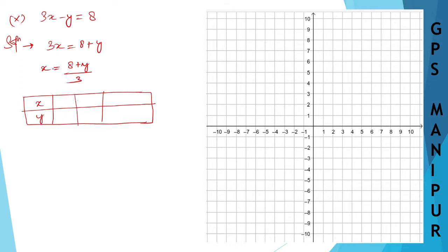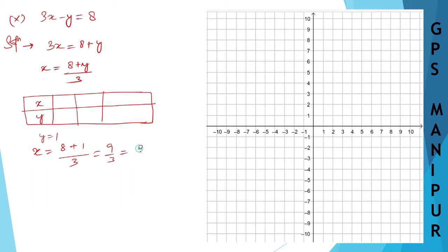Let's take y equal to 1. So x will be equal to 8 plus 1 divided by 3, which is 9 divided by 3, which is 3. So when y is equal to 1, x is 3.